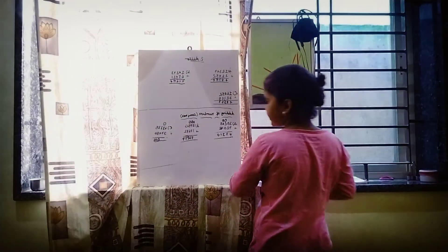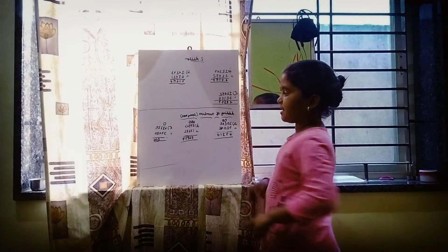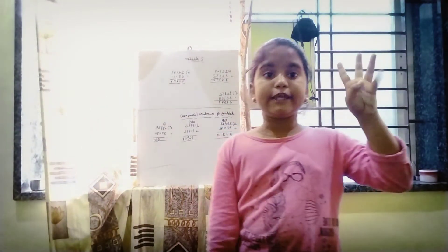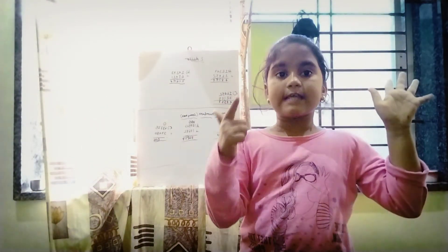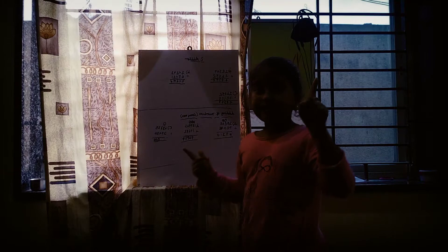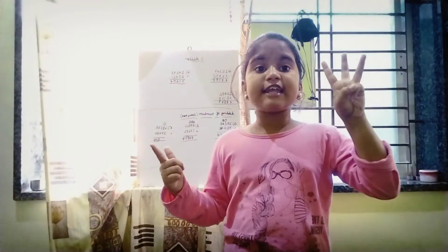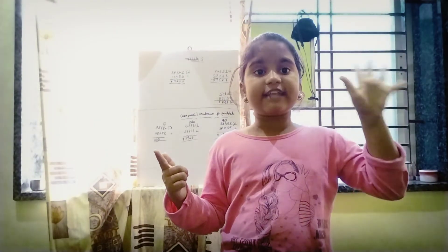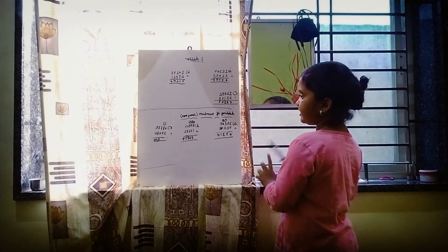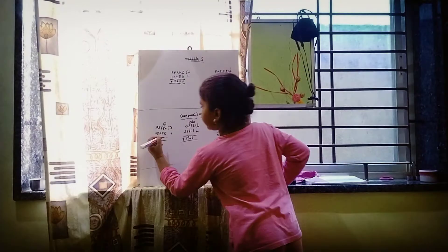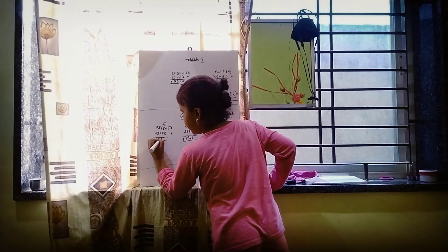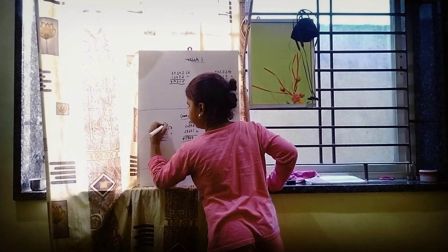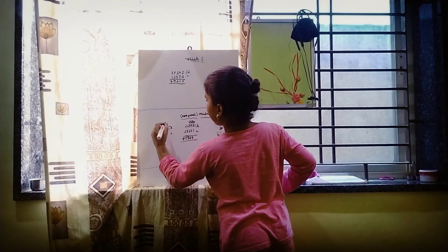Next, 8 plus 7: 1, 2, 3, 4, 5, 6, 7, 8, 9, 10, 11, 12, 13, 14, 15. Join the carry, right here, 16. Put on carry.